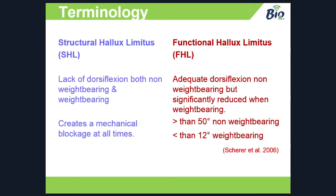Let's split hallux limitus into two categories. On the left we've got structural hallux limitus, which refers to a lack of dorsiflexion both non-weight bearing and weight bearing — it creates a mechanical blockage at all times, usually because of trauma to the joint. Functional hallux limitus is a bit different. First described in 1972, it says that you've got adequate dorsiflexion non-weight bearing, but significantly reduced when weight bearing. It's okay when your patient's lying prone or supine on the couch, but as soon as you stand them up you get a significantly reduced range of motion in the first MPJ.